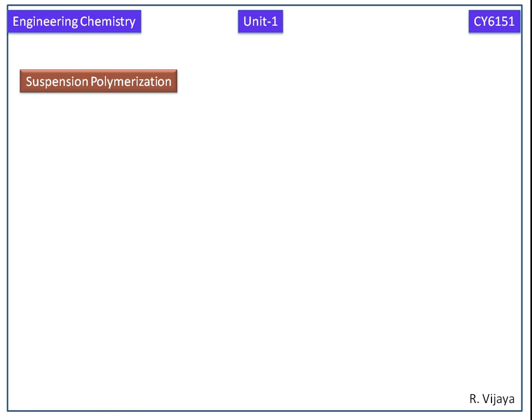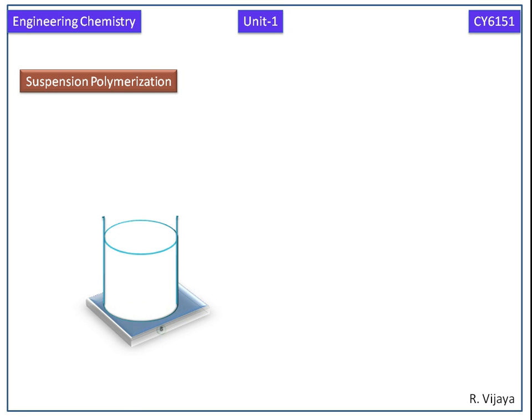Now we discuss suspension polymerization. A beaker is kept on a thermostat. Water is taken in the beaker. It contains an agitator. Now we are adding the monomer.